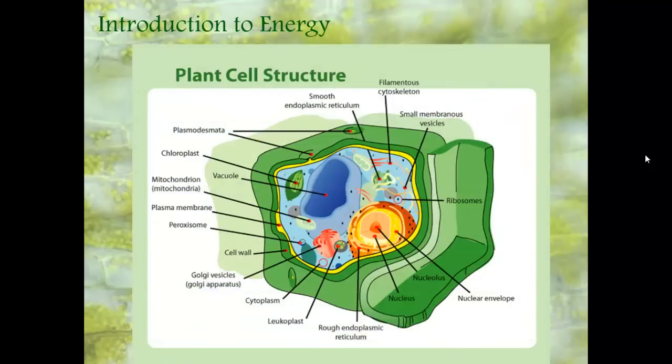So let's look at a plant structure. What is unique to a plant structure? Remember, there are four things that are unique to a plant structure. Let's see if you can find them. Let's start with the obvious: the chloroplast.